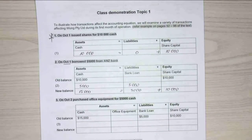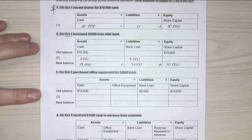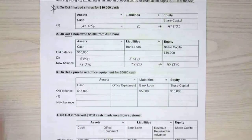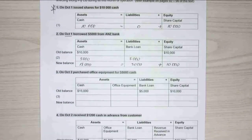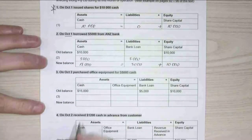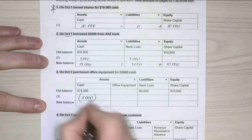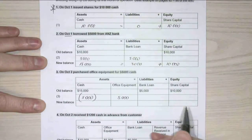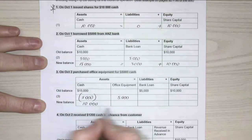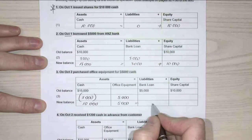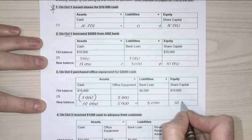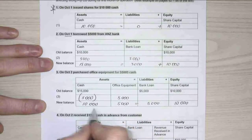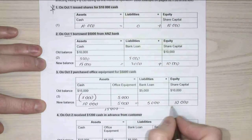Transaction number three: we purchased some office equipment for $5,000 cash. Just assets are affected — $5,000 down in cash (bracketed to indicate decrease) and equipment increasing by $5,000. My new cash balance is $10,000, office equipment is $5,000. This equals my bank loan of $5,000 plus share capital of $10,000, so assets of $15,000 equals liabilities plus equity.